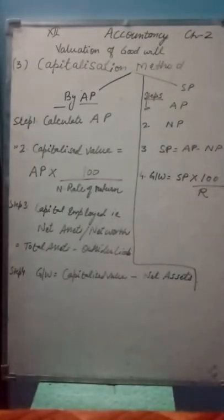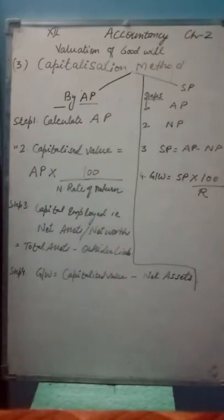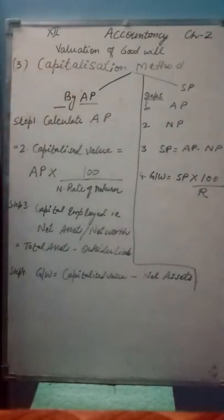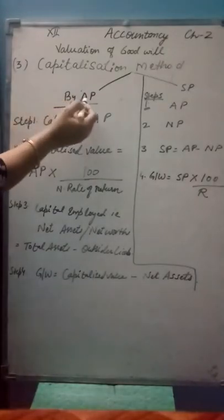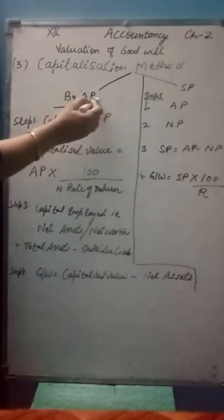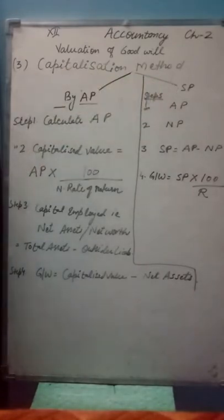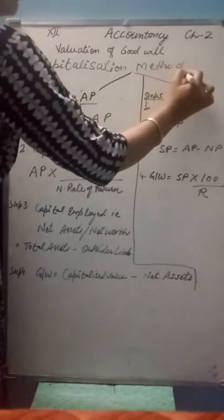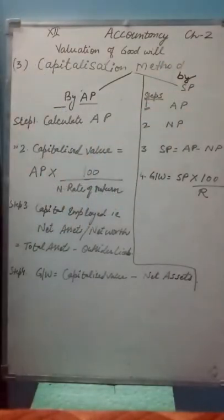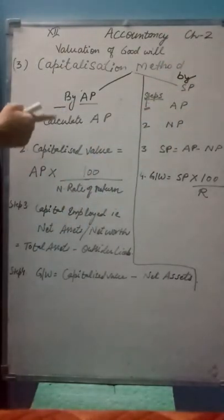Now children, Chapter 2 - Valuation of Goodwill. This is our last method: Capitalization Method. Under this method, goodwill can be calculated in two ways: number one by Average Profit Method, and by SP - Super Profit Method.